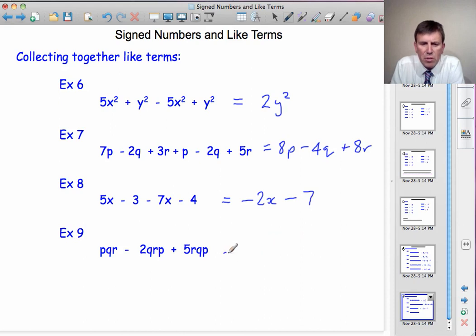And our last example, what have we got? We've got pqr's, qrp's, and rqp's. But they are all essentially the same. As I said, each one of those has a p, a q, and an r multiplied together. And the order doesn't matter. So I can treat them all as pqr's, which would mean I had 1pqr minus 2pqr plus 5pqr. 1 minus 2 is minus 1, minus 1 plus 5 is 4, so altogether I can write this as 4pqr. And I can put those three letters in any order, it wouldn't matter.